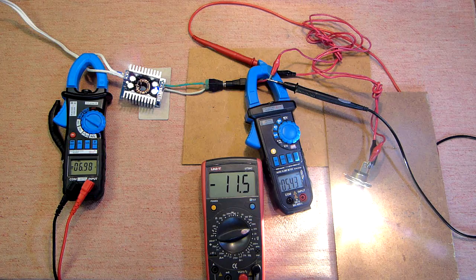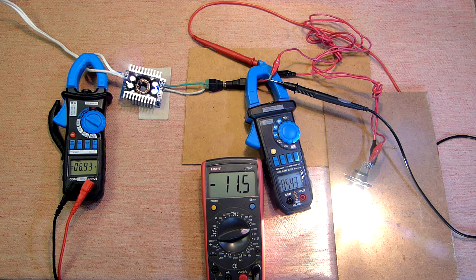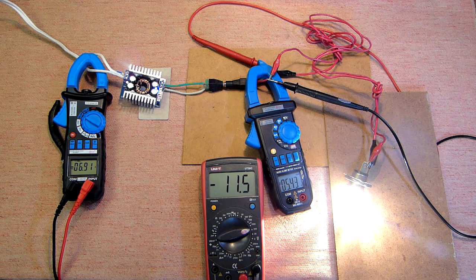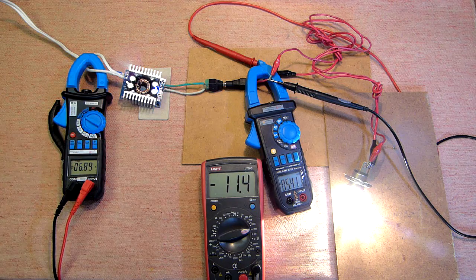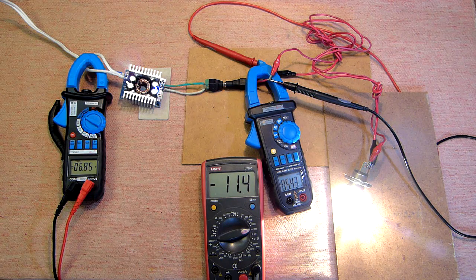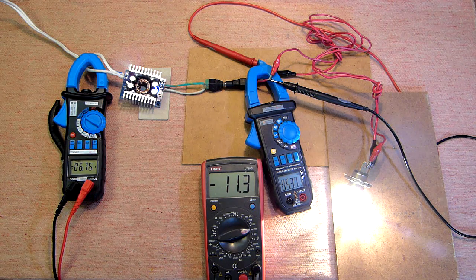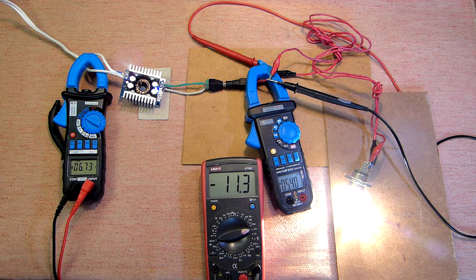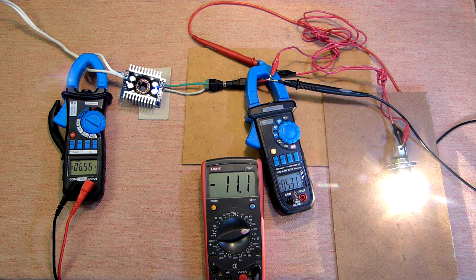The power source voltage decreased to 10.1 volts, and at the output of this device can provide only 11.4 volts. As to the amperage, it's not more than 5.5 amps. Let's measure the temperature.